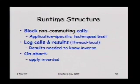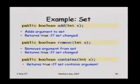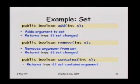The runtime structure blocks non-commuting calls. You log the calls and results in a thread-local log. If you need to know the results of a call in order to figure out what the inverse is supposed to be, that's one of the subtleties. If a transaction aborts, you go through the log and apply the inverses in reverse order. I'm going to give three examples of increasing sophistication.